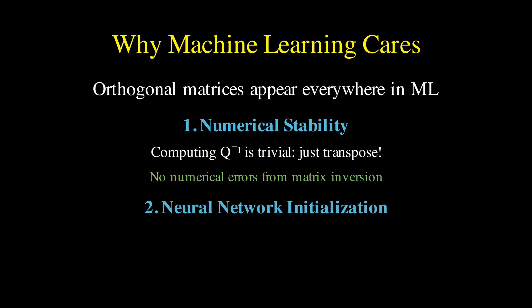Second, neural network initialization. When you initialize the weights of a deep neural network, you need to be careful. If the weights are too large, gradients can explode as they propagate backward.